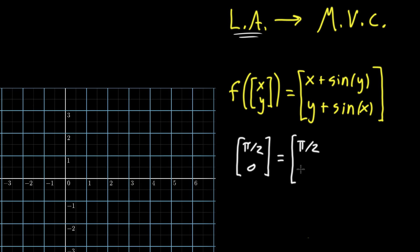And then for the bottom, y, well, y is also zero, plus sine of x. Sine of pi halves is one. I'll go ahead and write sine of pi halves. But you can think of that as just being one.